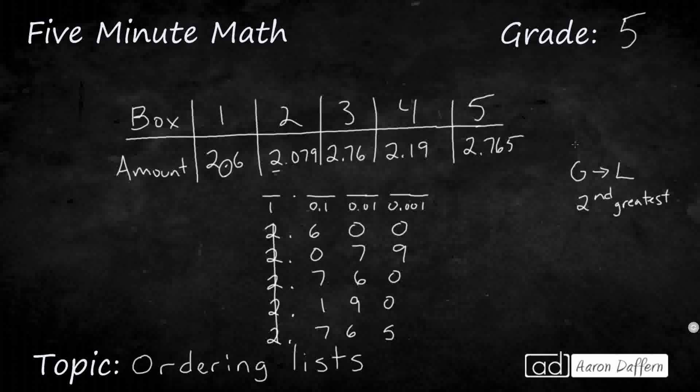Now why would we add these zeros? Because now I'm not looking at the twos in the ones place, because that's not helping me. Take a look at these numbers. I'm just looking at 600, I get 79, I get 760, 190, 765. That's going to be a lot easier for me to order.